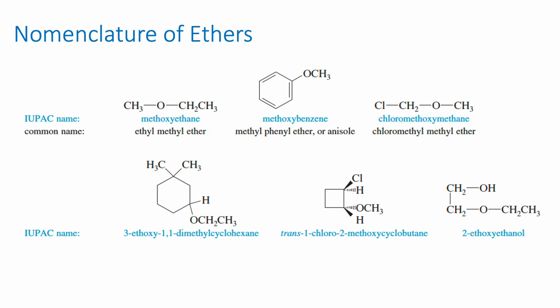Some ethers are too complicated for the common name. For example, looking at the three examples on the bottom — the first one with a cyclohexane ring has an ethyl group on one side of the oxygen and a cyclohexane ring with two methyl groups in specific positions on the other side. That's too complicated to break into two halves and use a common name, so in really complicated examples like this we're forced to use the IUPAC name.